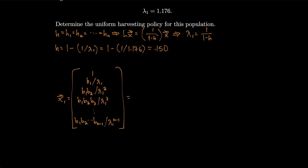Evaluating numerically, the population distribution vector comes out to: 1, 0.719, 0.596, 0.489, 0.395, 0.311, 0.237, 0.171, 0.114, and continuing for the remaining age classes.